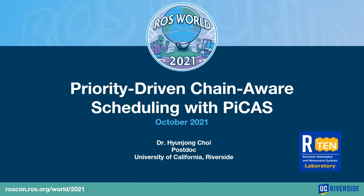Hello everyone. I'm Hyunjung Choi, a postdoc from the i10 laboratory led by Professor Hyo-Sing Kim at University of California Riverside. Today, I'm going to talk about priority-driven chain-aware scheduling for ROS2. Our work is a new executor and has been published at the RTAS conference in CPS Week this year, which is a real-time conference focusing on embedded real-time and time-sensitive systems.